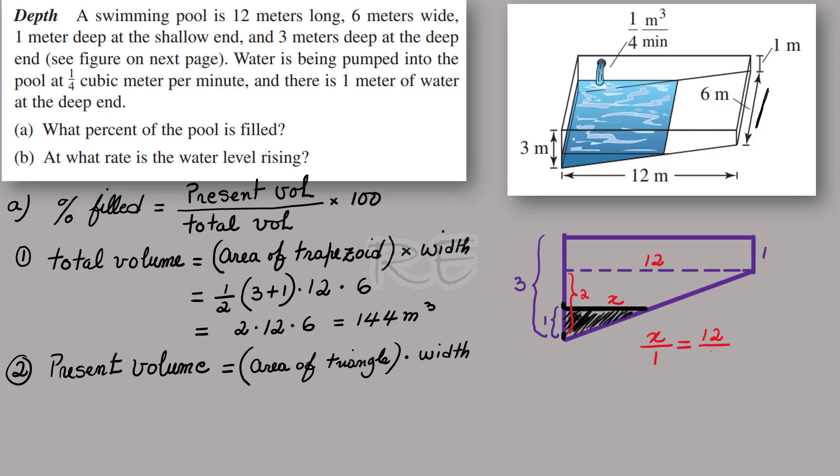X is to 1 while 12 is to 2. Similar triangles have corresponding sides that are proportional. So we find the base of the small triangle made by the water, which is 6.